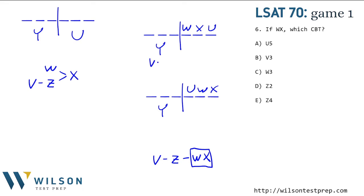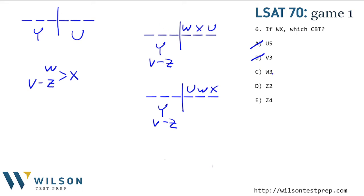So the first three spots are going to be V before Z and Y in some order. Which could be true? Could U be in the fifth spot? No — either X or W is in the fifth spot. Could V be in the third spot? No, V has to be before Z, so V could only be first or second. Could W be in the third spot? No, W is either fourth or fifth. Could Z be in the second spot? Yes — we could have V, Z, Y in spots one through three in either scenario. Z in the second spot works. Could Z be in the fourth spot? No, the fourth spot is occupied by W. So D — Z in the second spot — is the only one that could be true.